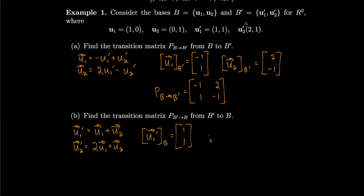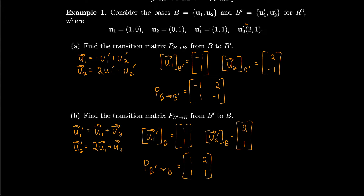U2 prime expressed in terms of the old basis is the coordinate vector 2, 1, just reading off those coefficients. So the transition matrix from the new basis B prime back to the old basis B is the matrix with columns 1, 1 and 2, 1. This means that if we start with a vector expressed in the new basis B prime, we can get back to the old basis by multiplying by this transition matrix P.